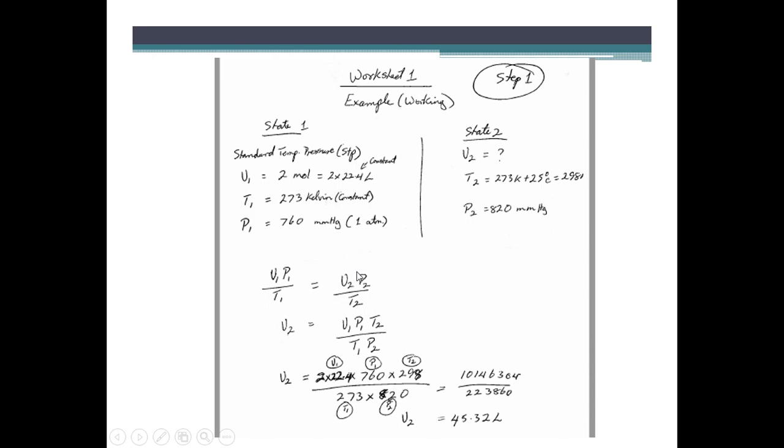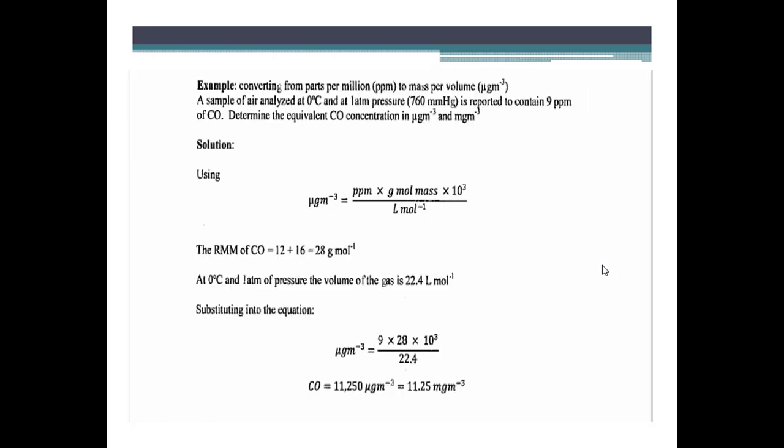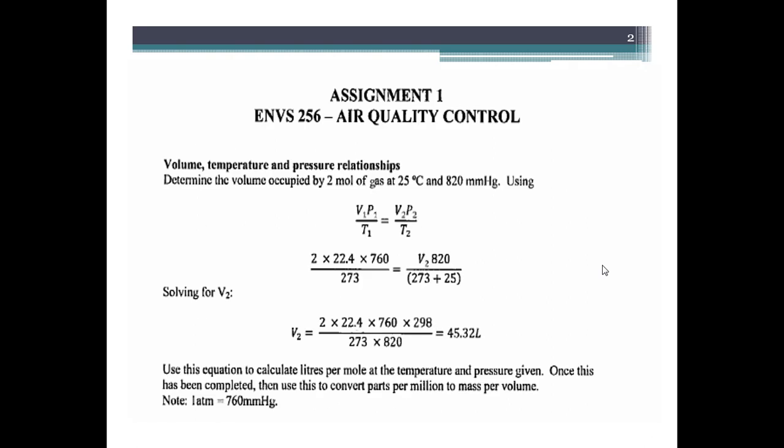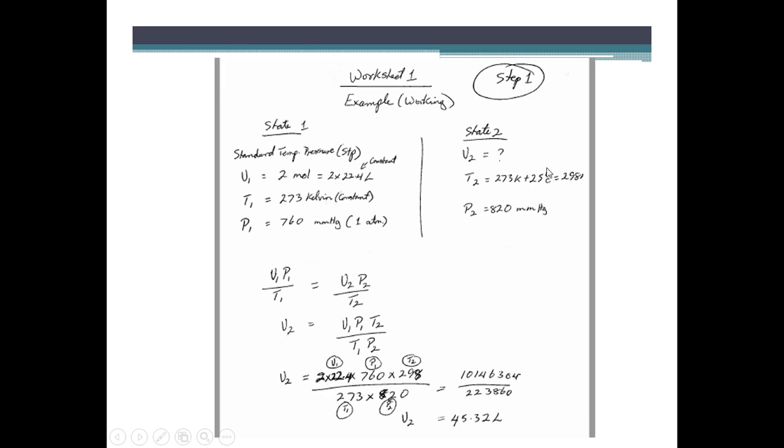So state 2, on this side, state 2 is what we are solving for the volume, which is V2. Remember we don't know the volume. T2 is the temperature 25 degrees Celsius, so we need to convert that to Kelvin, so now we have 298. So that's the Kelvin constant plus 25 gives us 298. And then our P2, if you recall from the information provided, our P2 would be this pressure here. So we have all our information available and organized there for us. So that means we can begin.